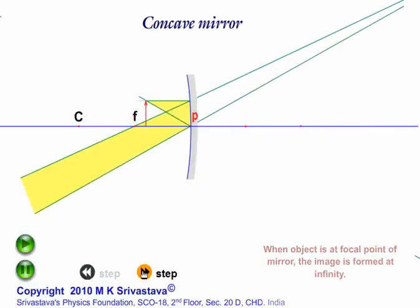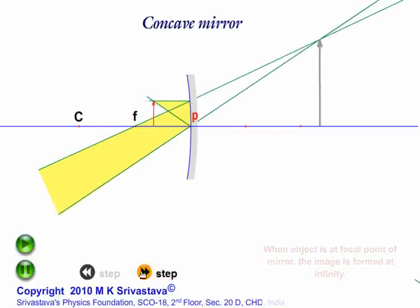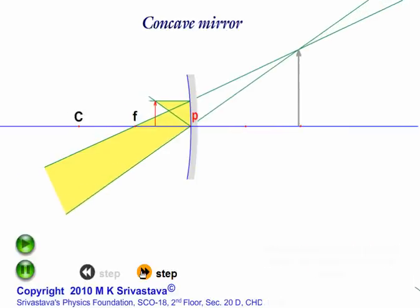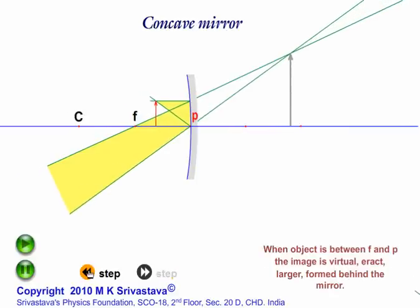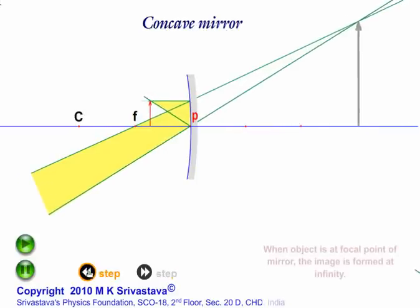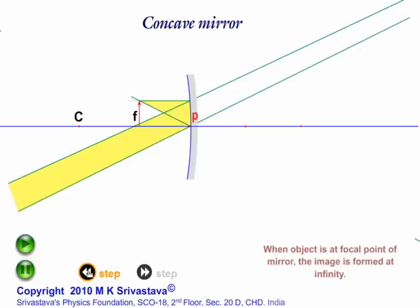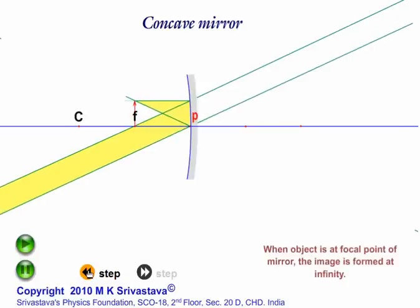You can move it stepwise using these two buttons, going back or forward to see what is happening step by step. For each standard position, the position and nature of the image is explained.